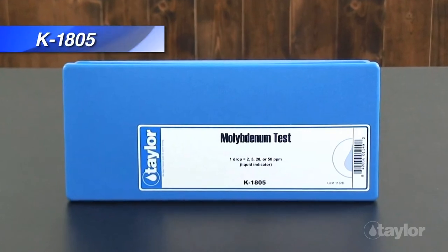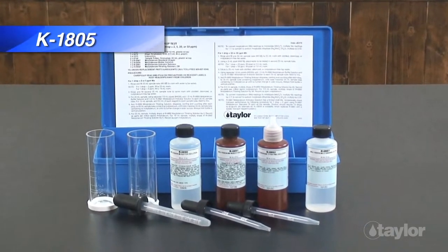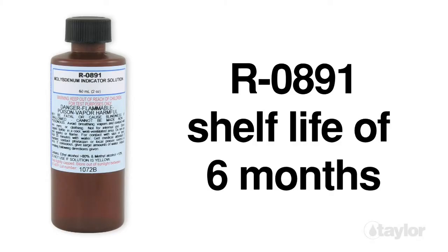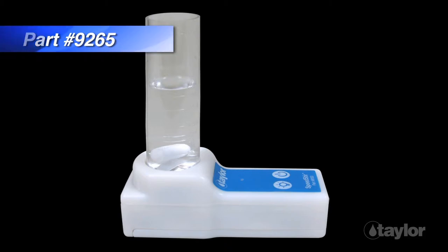Taylor's optional kit for testing molybdenum, K1805, contains a prepared liquid indicator, R-0891, that has a shelf life of 6 months. For this demonstration, we are using Taylor's Speedster, which is sold separately, but you can also manually swirl the sample.